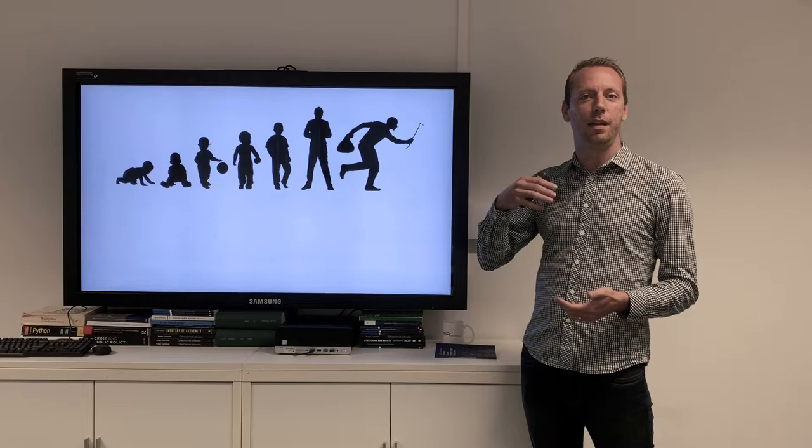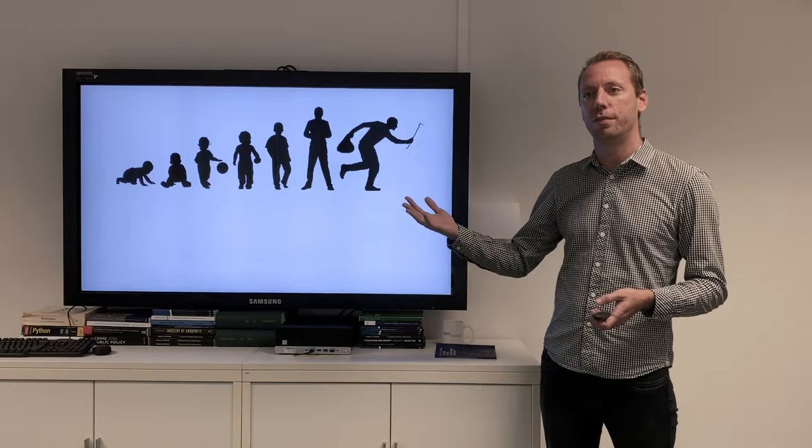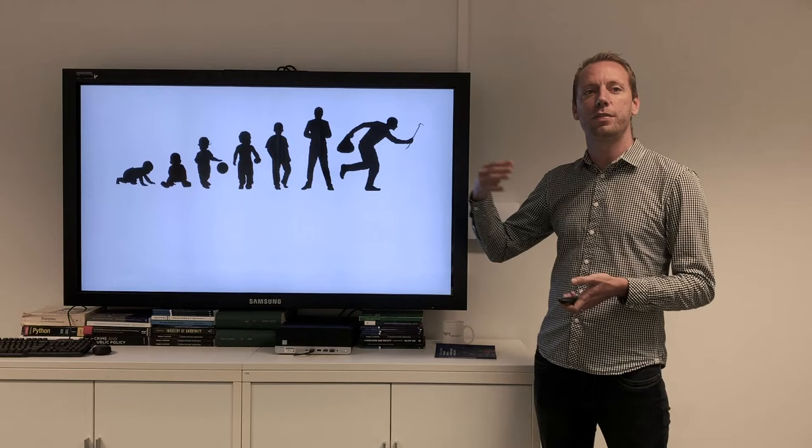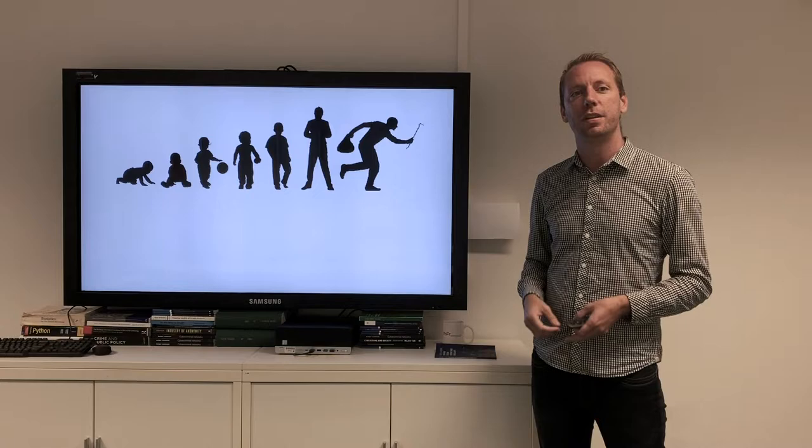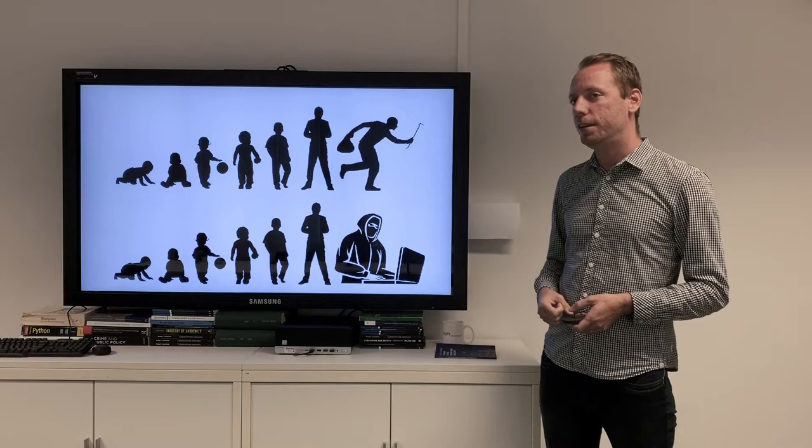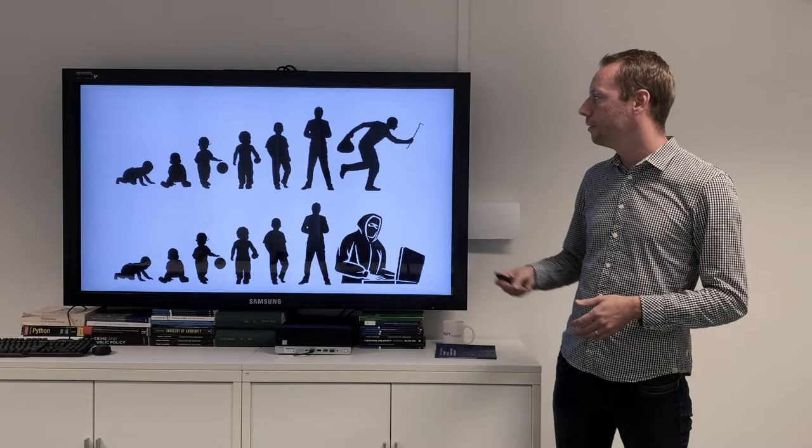My background as a researcher is in life-course criminology instead of cybercrime. What we do in life-course criminology is look at the development of antisocial or criminal behavior over the life course of offenders. In each stage of life we see whether or not they're involved in criminal antisocial behavior, whether there are certain life events that affect their later criminal behavior, and things like that. There are a lot of theories and empirical research, but all focus on traditional types of crimes while we know relatively little about the life course of cybercriminals, which is mainly caused by the fact that we don't have a lot of longitudinal data on cybercriminals. That's something we're going to do with this paper.